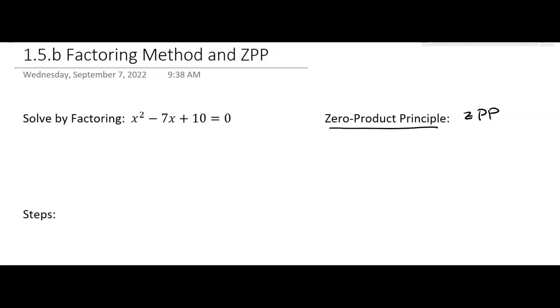And the old ZPP says if you have A times B, so if A times B equals zero, then either A equals zero or B equals zero. So what we're saying is if there's multiplication involved and it equals zero, then one of those things that you're multiplying, one of the factors, has to equal zero.